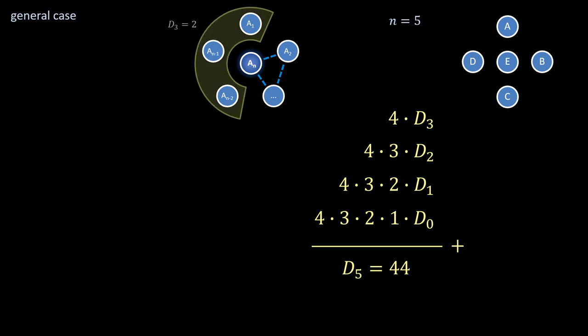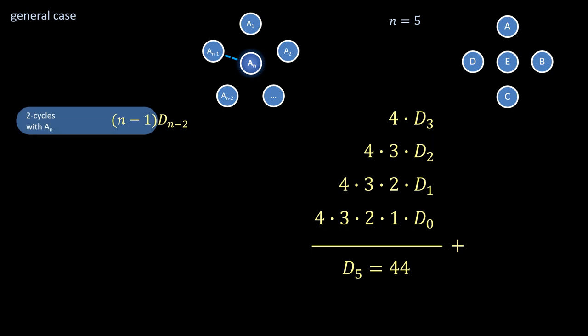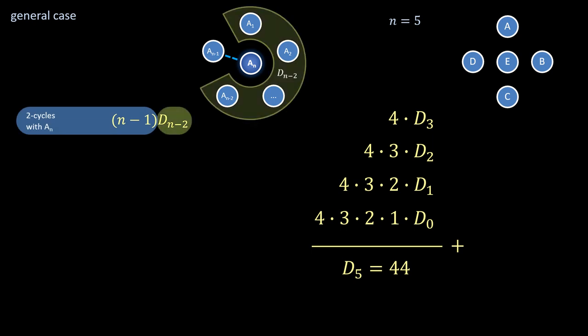Now it's a matter of finding expressions for the contributions of all possible cycles containing a_n, the new element. Starting with 2 cycles, which a_n can form with any of the previous elements. So that's n minus 1 possible 2 cycles, times D_(n-2), the derangement count within the excluded subsets.